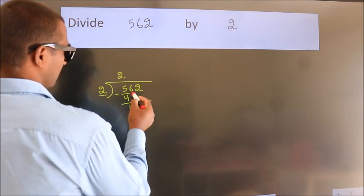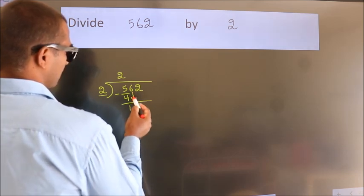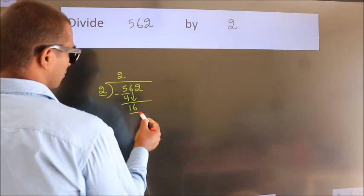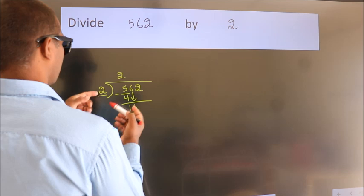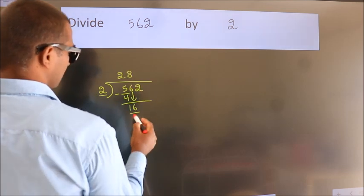After this, bring down the beside number. So, 6 down. So, 16. When do we get 16? In 2 table, 2 8's, 16.